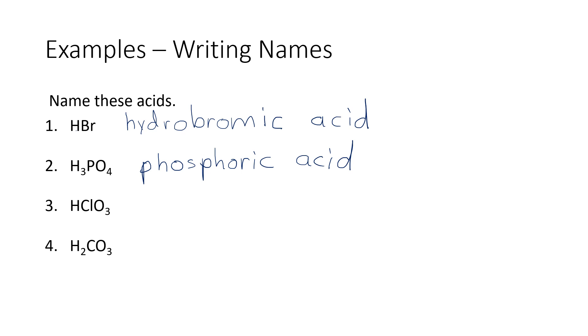HClO3, this is the chlorate polyatomic ion, so we do not use hydro. We just start with the chlor, and we use the ick ending, and this becomes chloric acid.